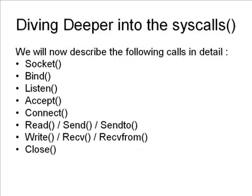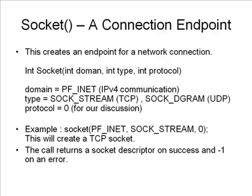Now let's dive deeper into the syscalls themselves. First, we look at socket. As we've already discussed, socket creates the endpoint for communication. What it takes in is a domain, a type, and a protocol. For IPv4 communication, the domain is always PF_INET. This is a hash define present in some of the include files. We just have to use it as is.